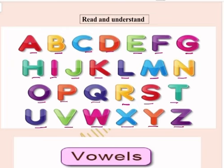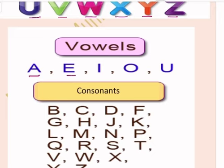Now, vowels. A, E, I, O, U. हमारे पास 5 vowels होते हैं. कौन से vowels होते हैं वो? A, E, I, O, U.